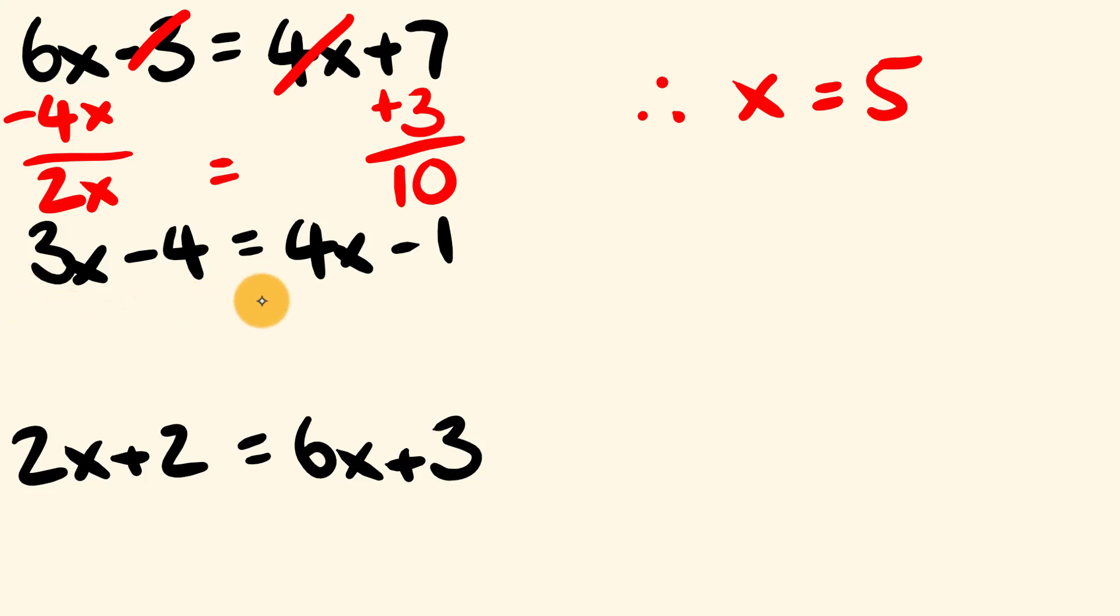We have 3x minus 4 equals 4x minus 1. So this time I'm going to get rid of the 3x on the left hand side here by taking it away. So I take 3x off the right hand side also. 4x minus 3x is equal to x. To get rid of this negative 1 here I'm going to add 1 to both sides. So we're going to add 1 to this side here. Negative 4 plus 1 is equal to negative 3.